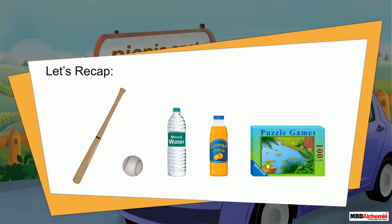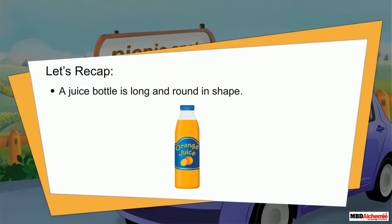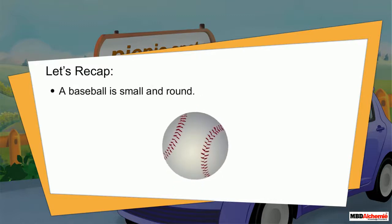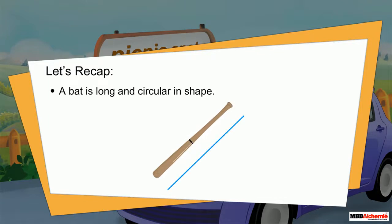We reached the picnic spot! Let's recap — we have seen different objects and learned about their features. For example, a juice bottle is long and round in shape, a baseball is small and round, a puzzle box is long and rectangular, and a bat is long and circular in shape. Similarly, we can describe other objects too on the basis of their observable features.